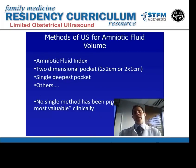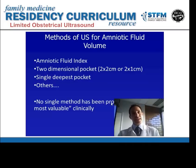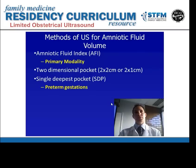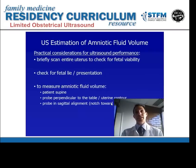We're going to talk about how we measure amniotic fluid by ultrasound — really estimating amniotic fluid volume. There are a number of different types of measurements that can be done. The amniotic fluid index is very common, as is the two-dimensional single deepest pocket measurement. No single method has ever been shown to be the most valuable one clinically. The primary tool I'd like you to use is the amniotic fluid index, and the single deepest pocket will be most useful in preterm gestations.